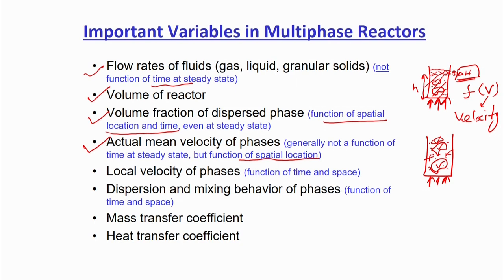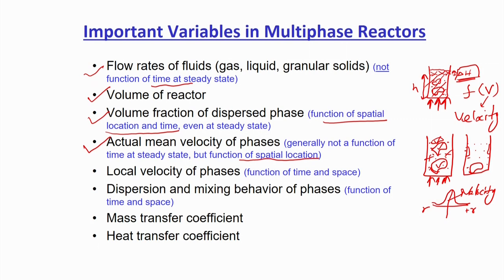Mean velocity of the phases is a critical parameter. It varies with spatial location but may not be a function of time in a time-averaged sense at steady state. The local velocity of the phases — as the bubble moves up, its velocity changes with location and time because the force dynamics keep changing. That makes local velocity of the phases also a very important variable to understand in multiphase flow reactors.